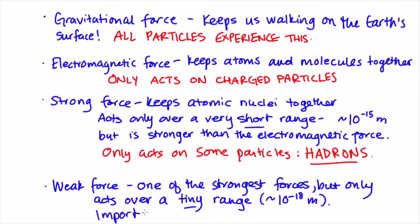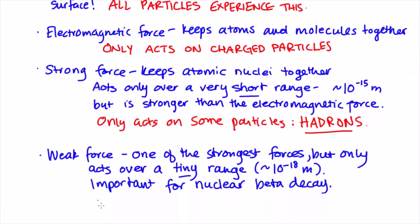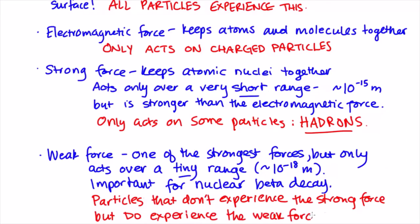Now, the weak force is responsible for turning protons into neutrons and vice versa in processes like nuclear beta decay. The weak force acts on all particles. We have a special name for particles that don't experience the strong force, but do experience the weak force. We call these particles leptons.